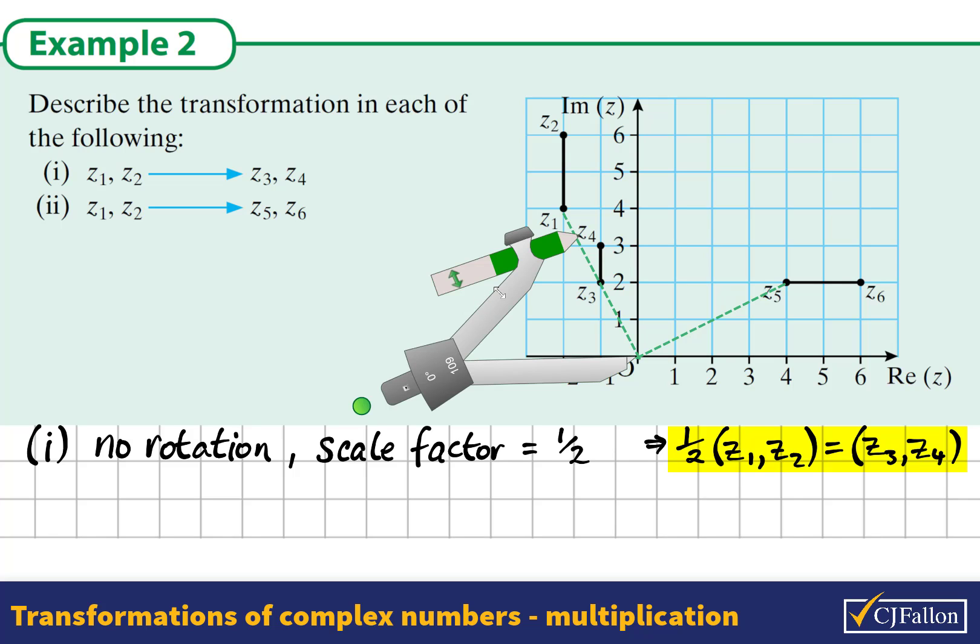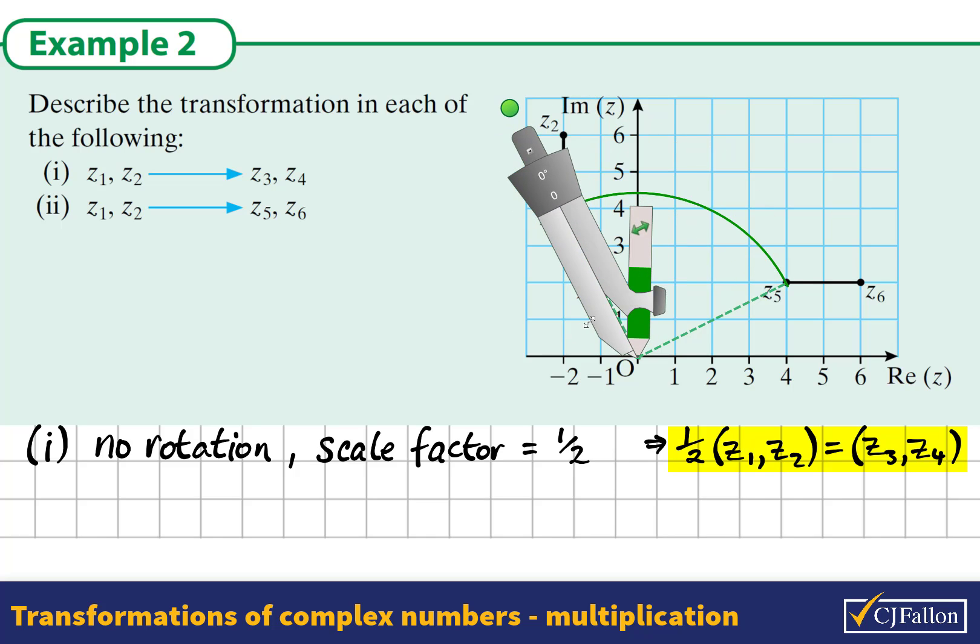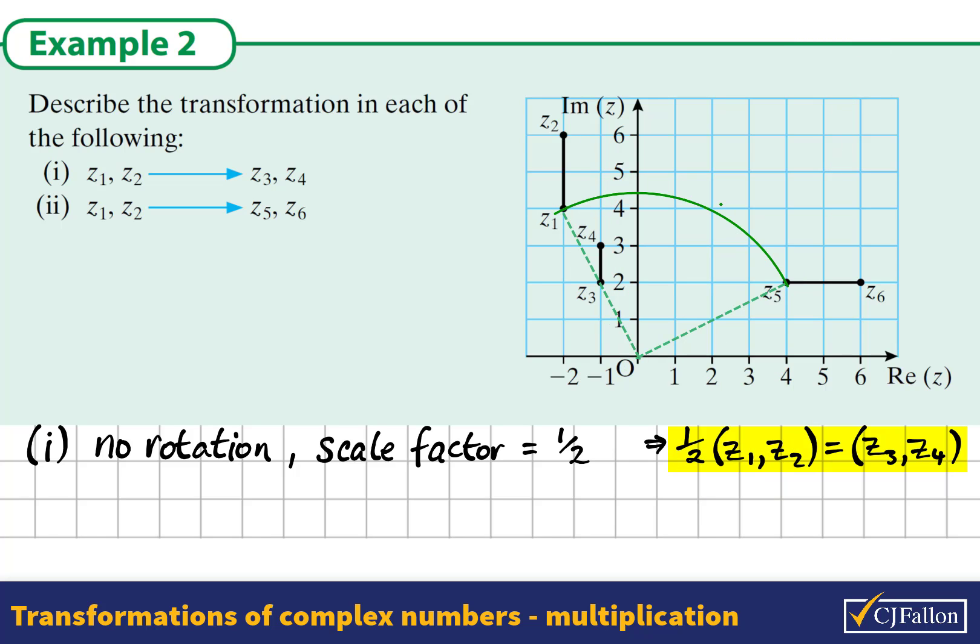If we think about the moduli, or the size of these complex numbers, we could see using a compass that they are exactly the same length. Both Z1 and Z5 have the same length, but there is a 90 degree angle between them. There is a rotation in the clockwise direction of 90 degrees.